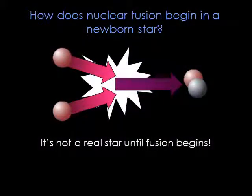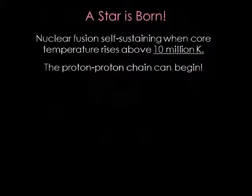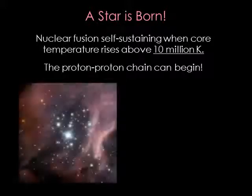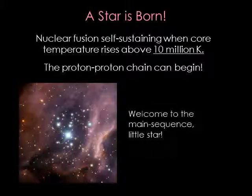We can't really call a protostar a star until nuclear fusion in its core begins. Fusion will happen when the core gets hot enough, and the core is getting hotter as the protostar accretes more and more mass. A protostar becomes a true star when its core temperature exceeds 10 million Kelvin — hot enough for the proton-proton chain to begin. The star is now a main-sequence star.